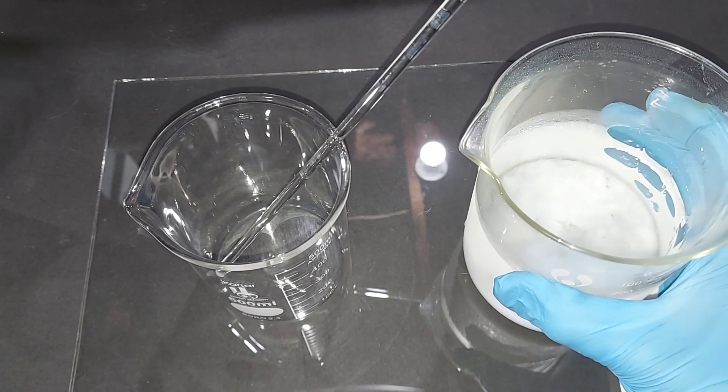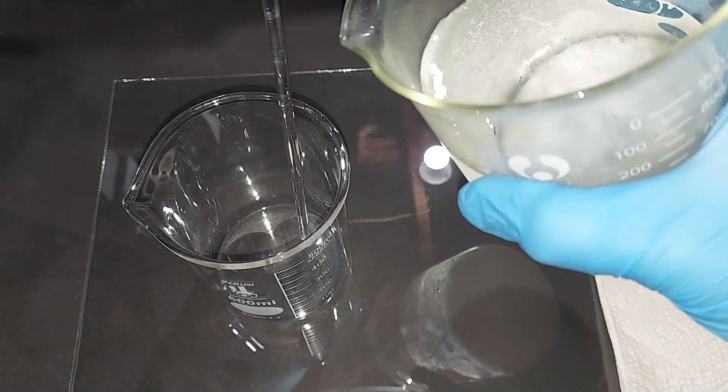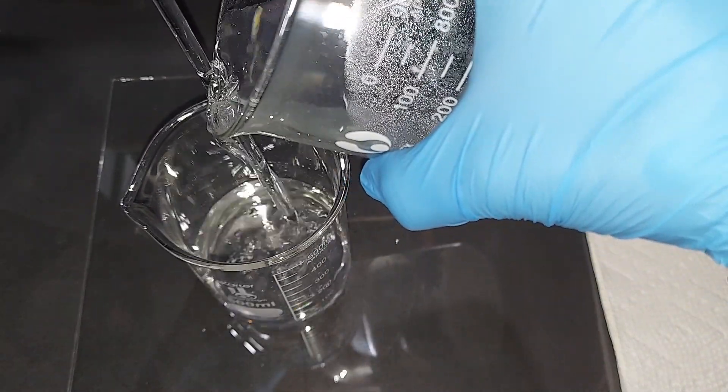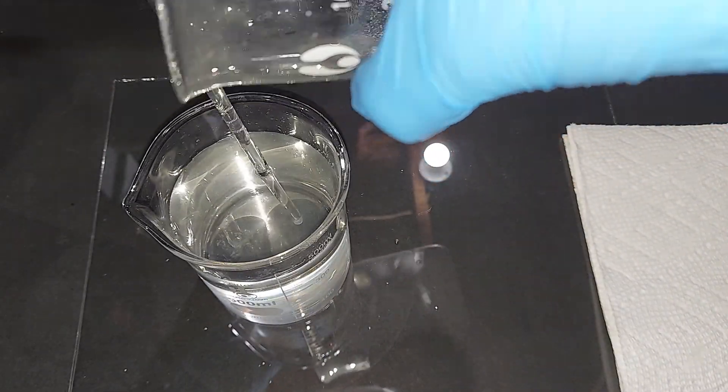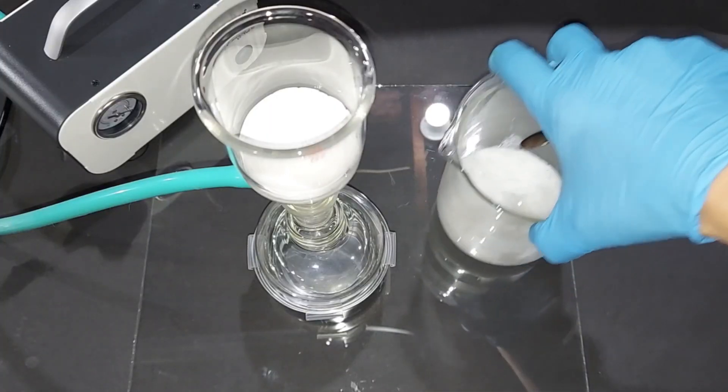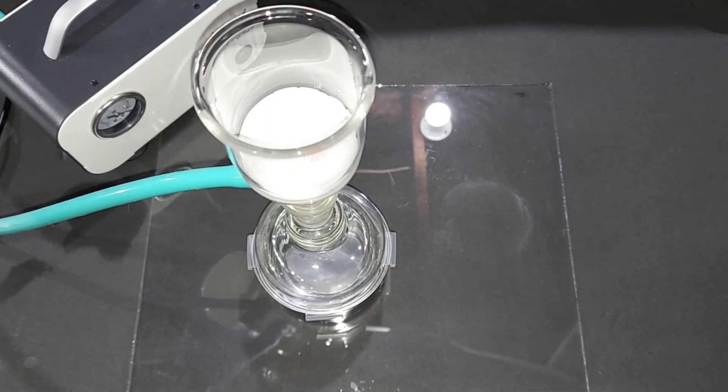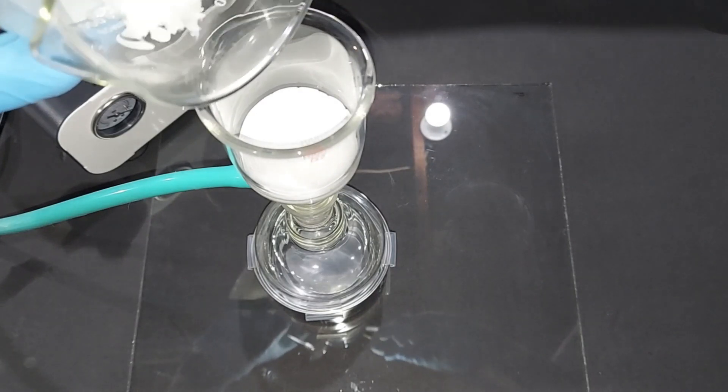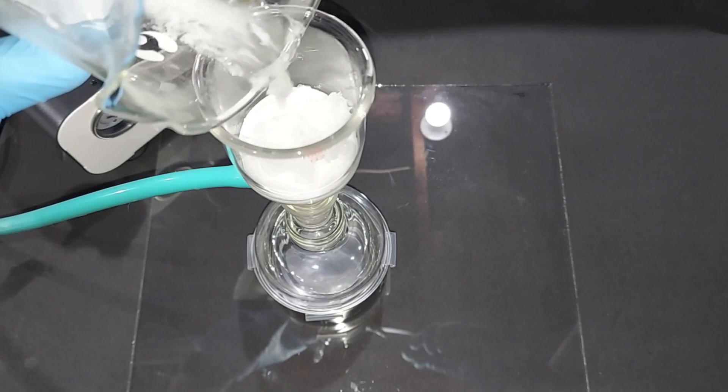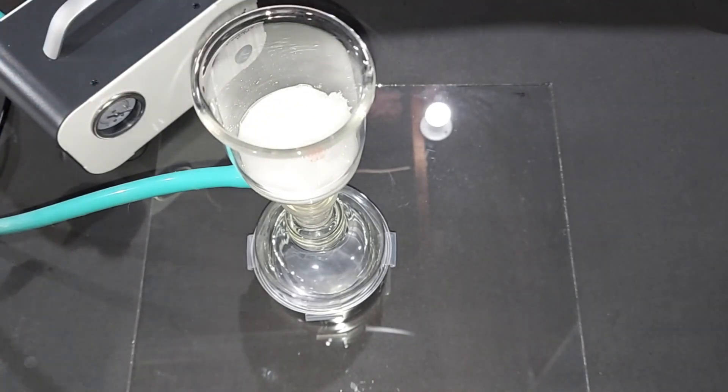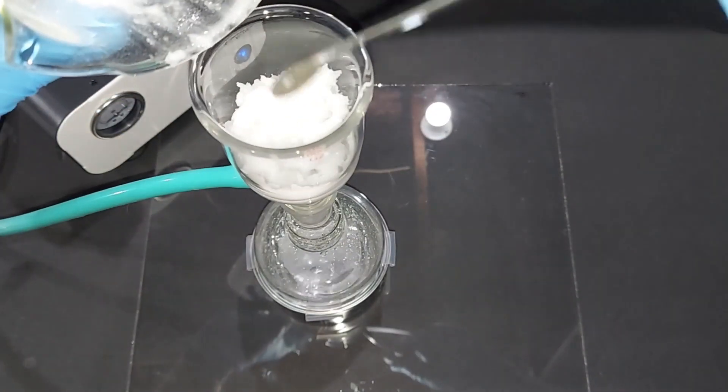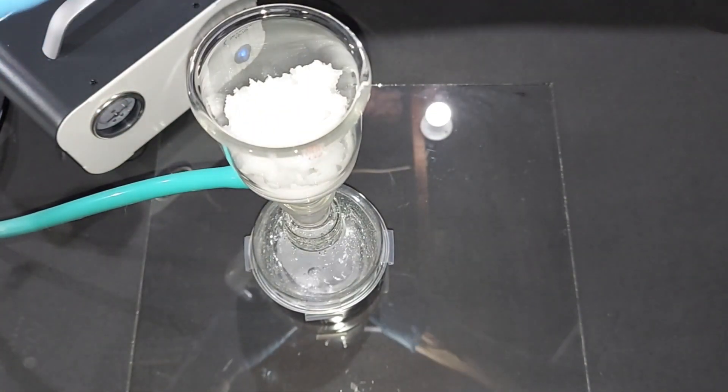Before I filter this, it makes sense to decant the liquid on top. Okay, there are the crystals. We're going to start filtering our potassium persulfate here. I do have a piece of filter paper in there. It's not necessary, but I just want to wet it first before I turn the pump on. I'll be back in a sec when I'm done.